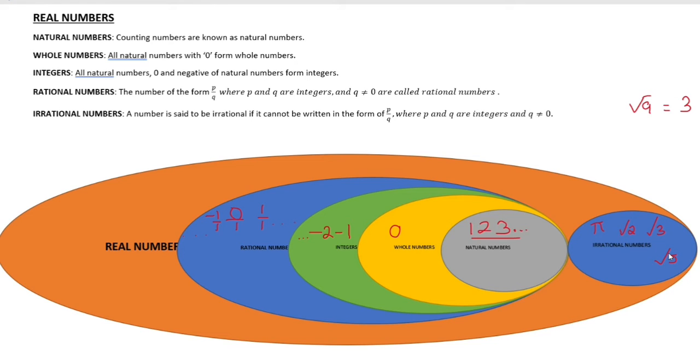A root number — that is, a square root — can be an irrational number.